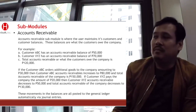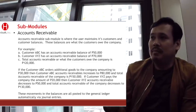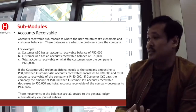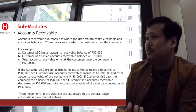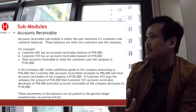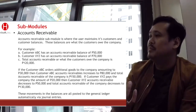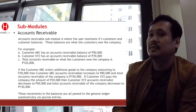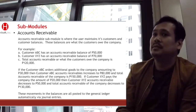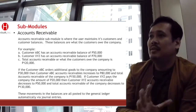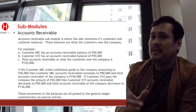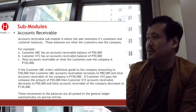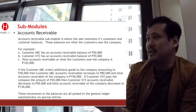Payable and receivable — these are the major trade transactions, from external parties. In an accounting system, receivable and payable are two major modules. The third is cash.